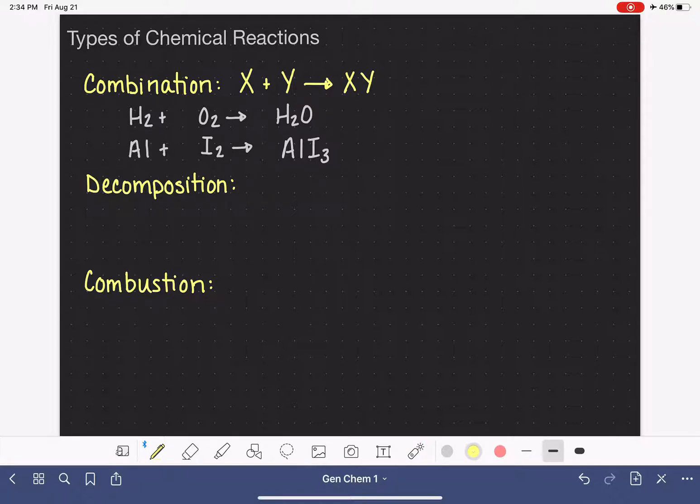A decomposition reaction is the opposite of a combination. So this is where we start with one molecule, and it decomposes or breaks down into two or more individual molecules. So here's a couple of examples of unbalanced decomposition reactions. H2O2, which is hydrogen peroxide, which decomposes to make water, H2O, and oxygen gas, O2.